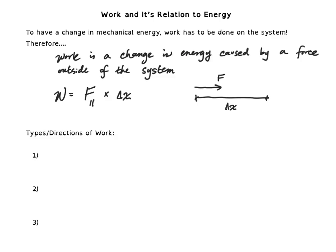Now moving on to directions of work. First we have positive work. Positive work means we have an increase in energy — a positive change in energy. To have positive work, your force needs to be in the same direction as your displacement. For example, on the previous slide, that spring was pushing in the same direction as the displacement of the crate, so we had positive work and an increase in the system's energy.